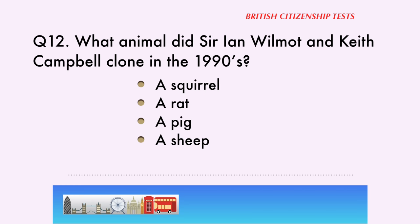Question 12. What animal did Sir Ian Wilmut and Keith Campbell clone in the 1990s? A squirrel, a rat, a pig, a sheep. The correct answer is: a sheep.